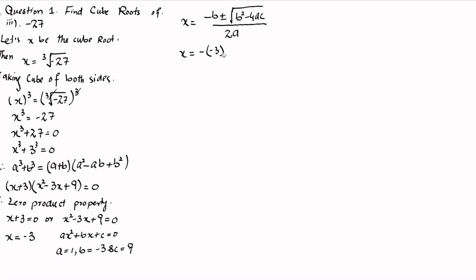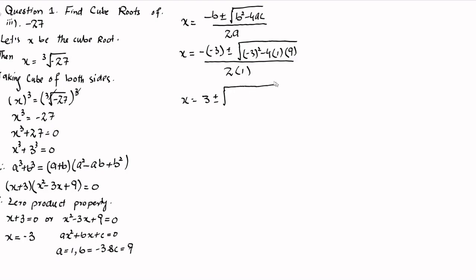So x is equal to minus of minus 3, plus or minus square root of minus 3 squared, minus 4 times 1 times 9, divided by 2 times 1. This gives x is equal to 3, plus or minus square root of 9 minus 36, divided by 2, which is x equals 3 plus or minus square root of minus 27, divided by 2.